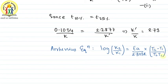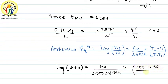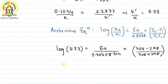Basically this represents 1/T1 minus 1/T2, written in combined form. Substituting values — k2 is k' and k1 is k — so log(2.73) equals Ea divided by (2.303 × 8.314) multiplied by the temperature difference term. Solving this, we get approximately Ea = 76.64 kJ/mol.